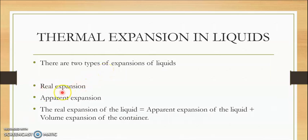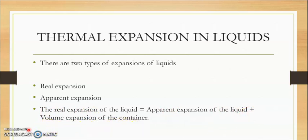We have two types of expansion: real expansion and apparent expansion. The formula is: real expansion of a liquid equals apparent expansion of a liquid plus volume expansion of the container. So real expansion = apparent expansion + container's volumetric expansion.